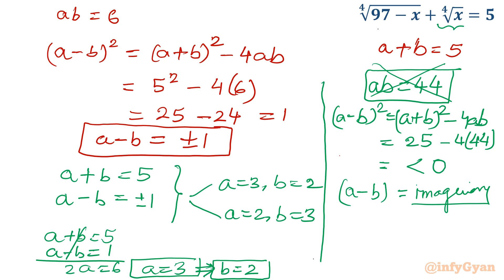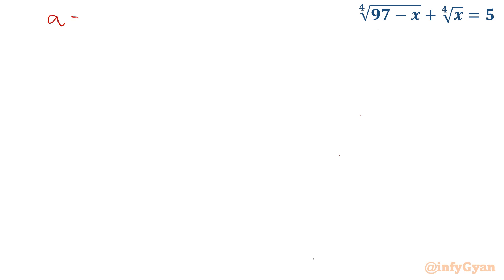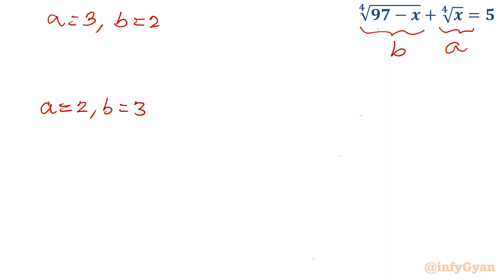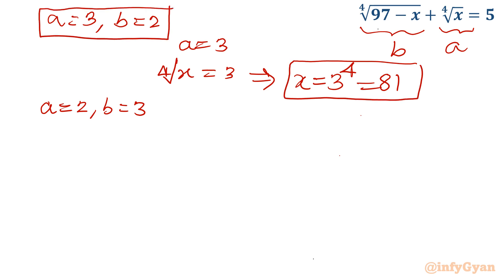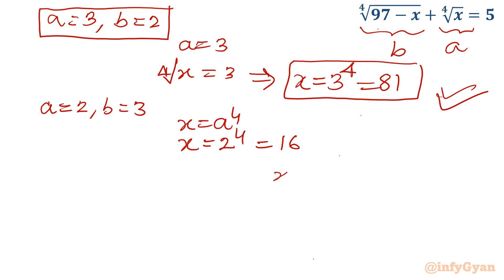Recalling that a equals 4th root of x: for a equals 3, we get x equals 3⁴ equals 81. For the second set with a equals 2, we get x equals 2⁴ equals 16. So from the first set x equals 81, and from the second set x equals 16.